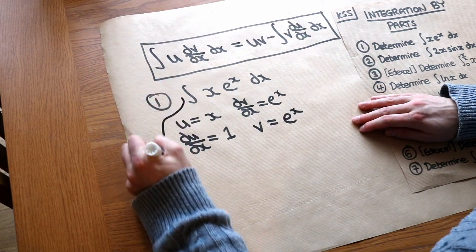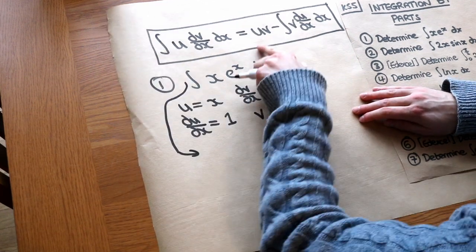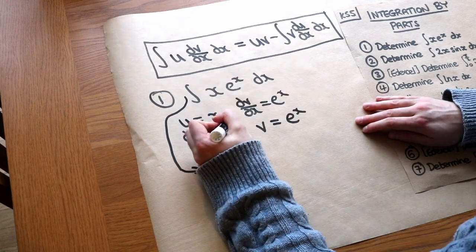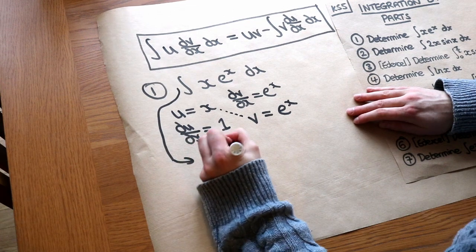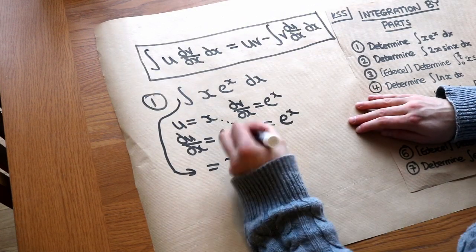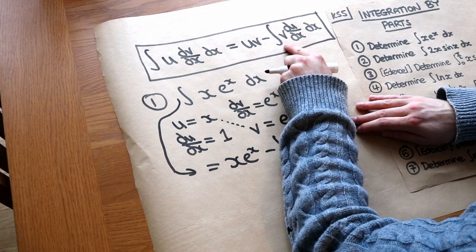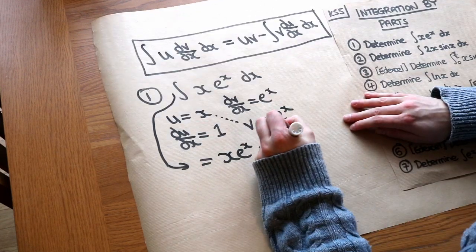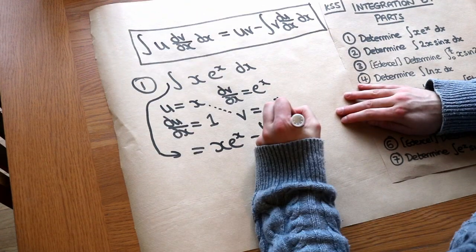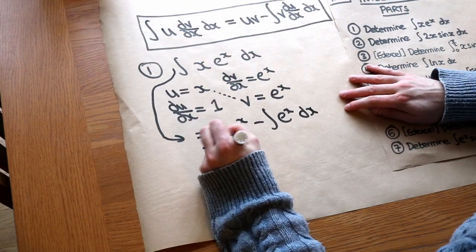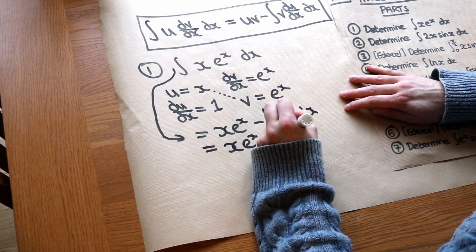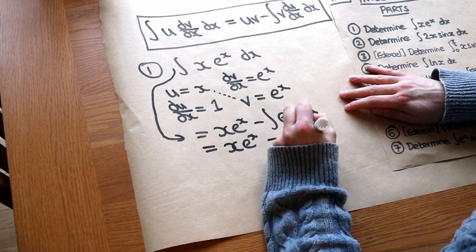Now we can just work out the result by substituting everything into the formula. We get u times v, which is x·eˣ, minus the integral of v times du/dx — that's eˣ times 1 — with respect to x. Then it's easy to finish: the integral of eˣ is just eˣ. So the answer is x·eˣ minus eˣ plus c.